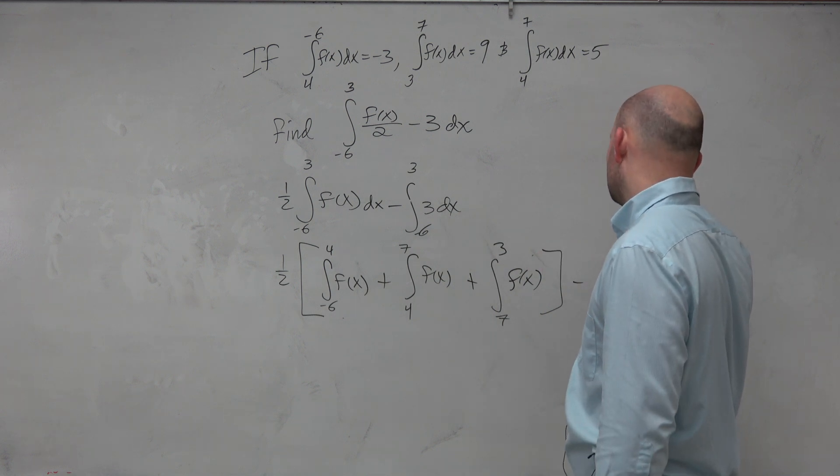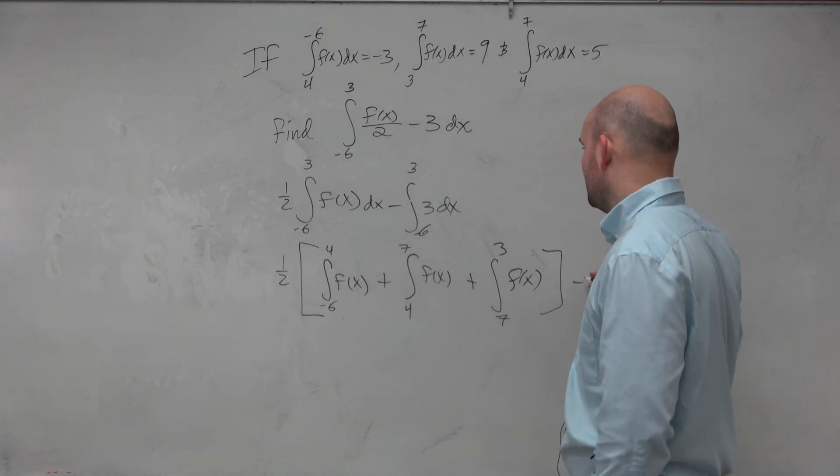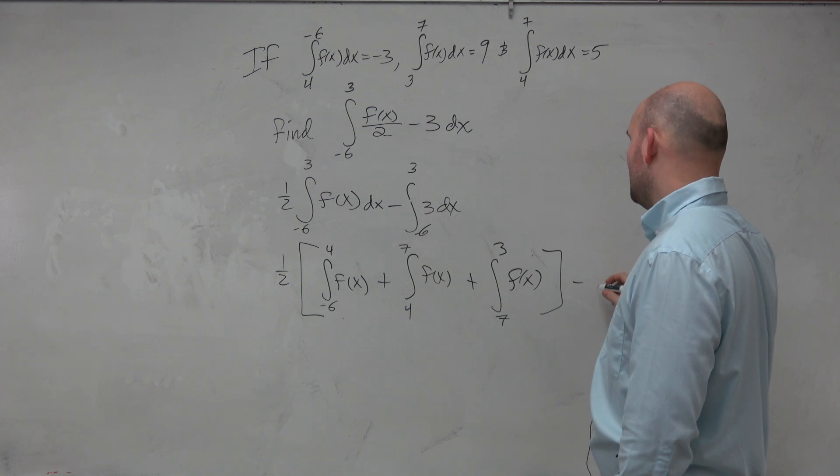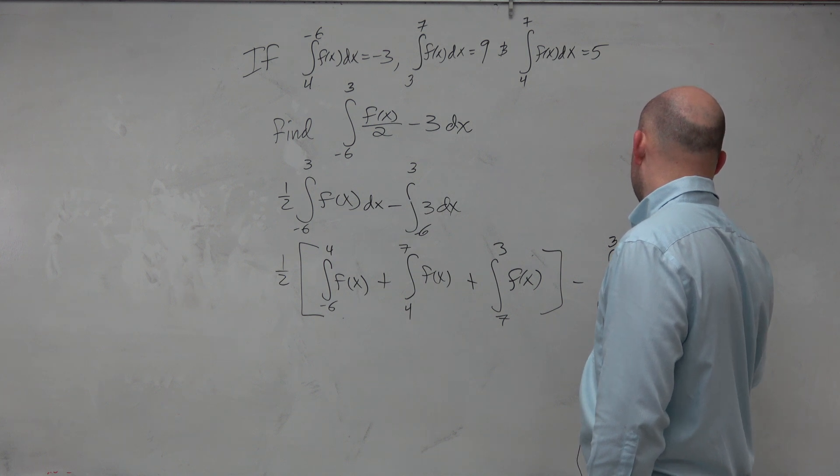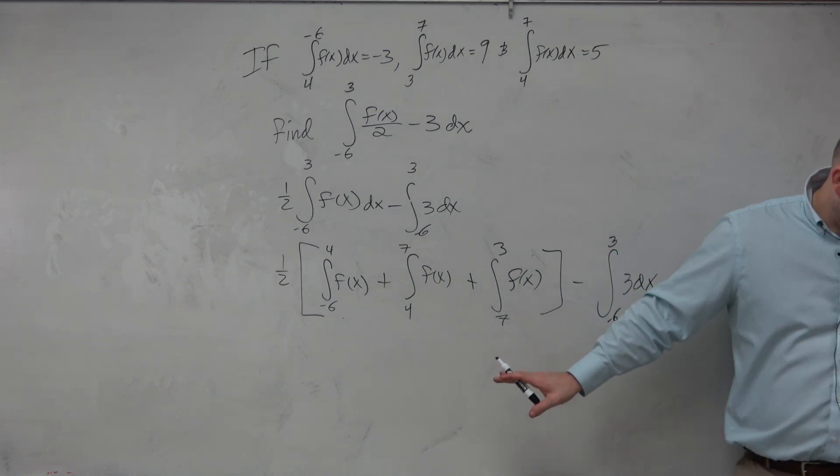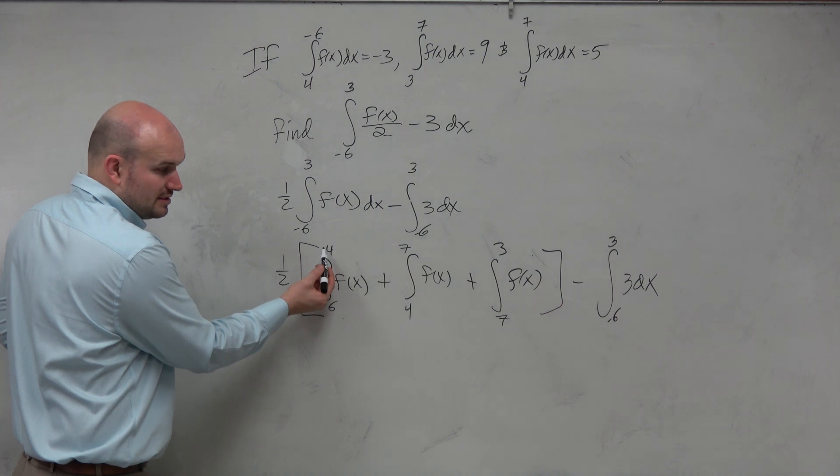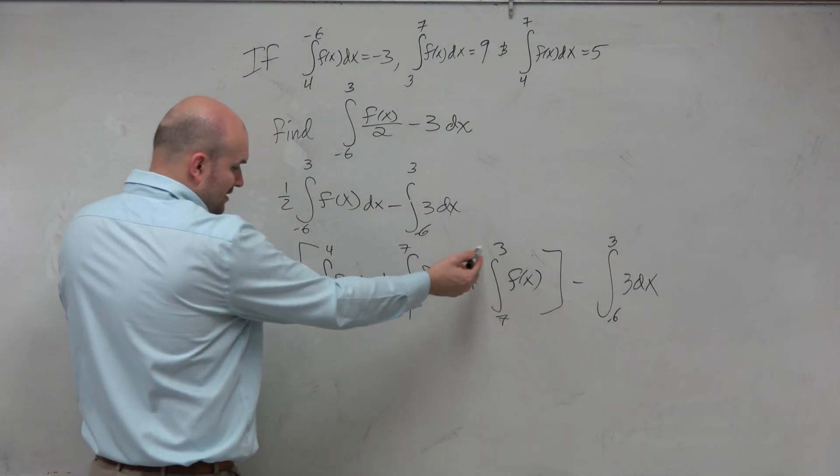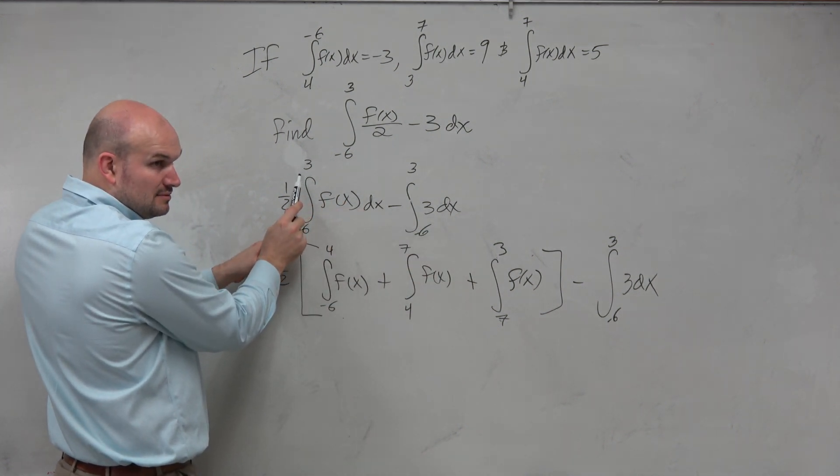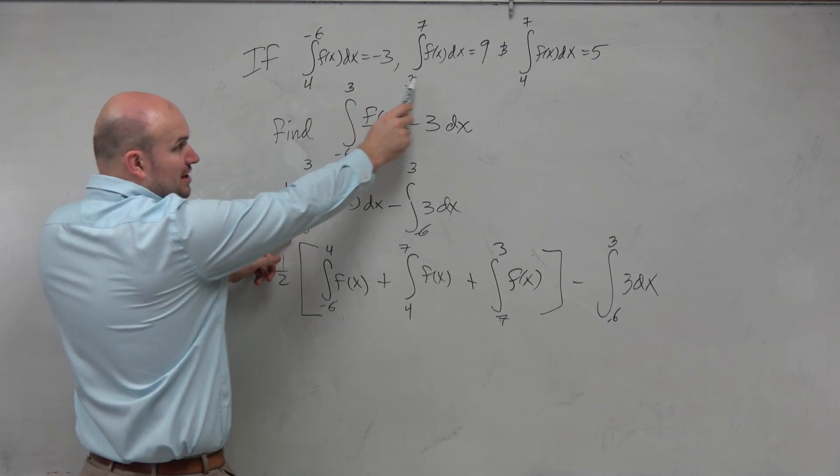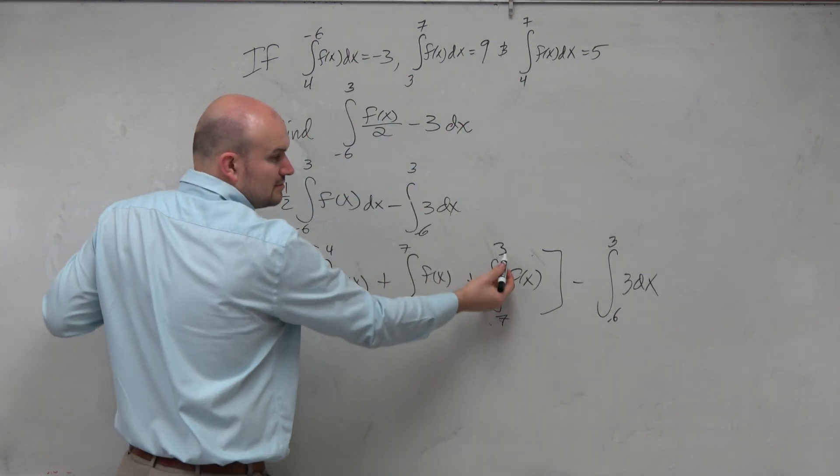Do I have one that goes from 7 to 3? No, but I could easily flip it, and then we're good. Does everybody see how I did this though? Do you see from negative 6 to 4 connects from 4 to 7, which connects from 7 to 3? It's the same thing. I'm starting at negative 6 and ending at 3, which is exactly what I wanted.